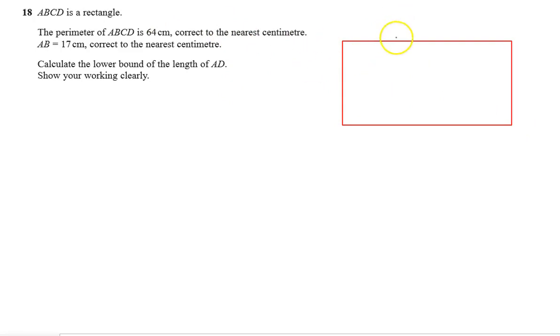Let's say this is a rectangle with points A, B, C and D. Say this is the length and this is the width. Length is given as 17 cm.